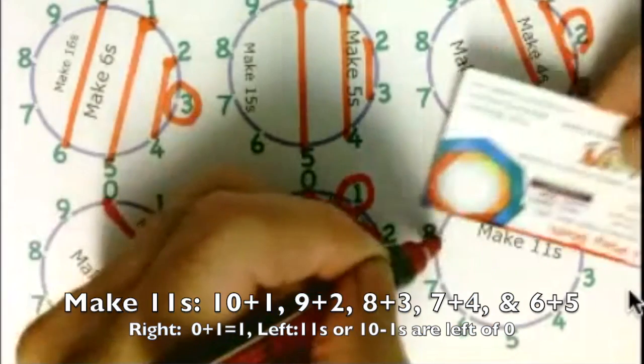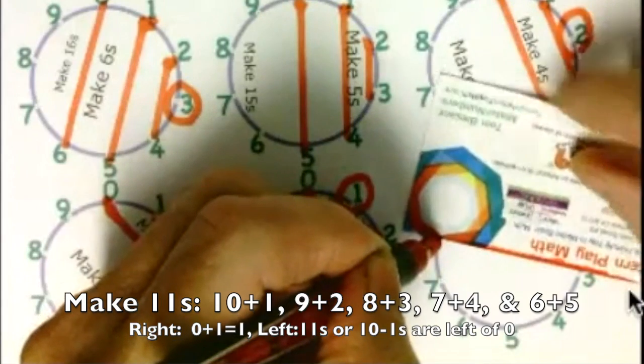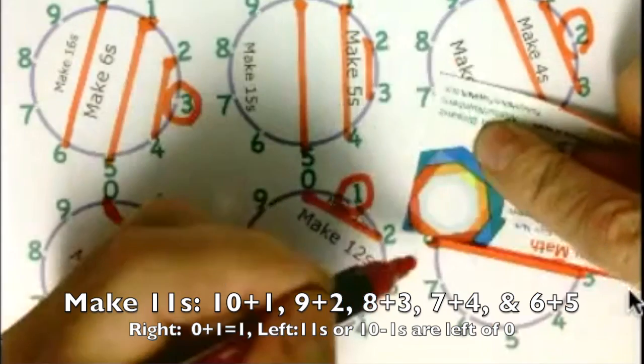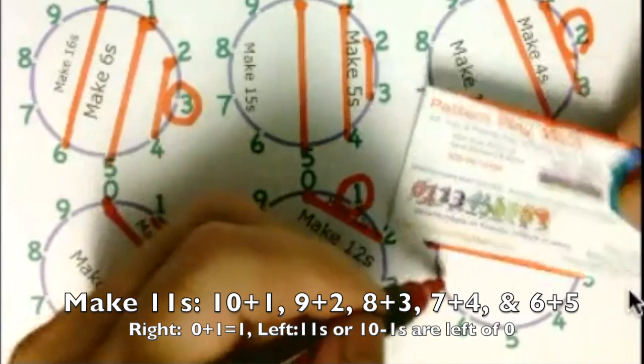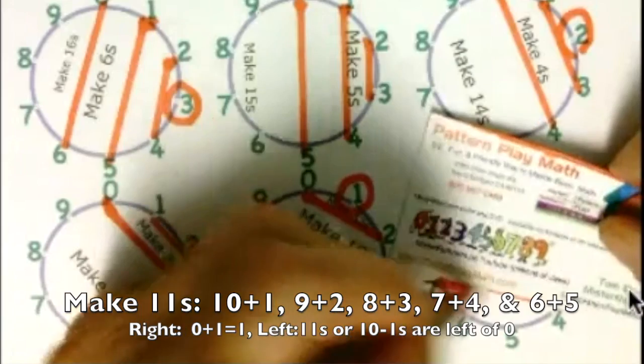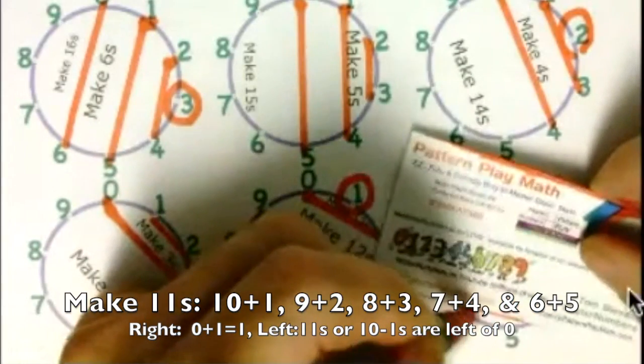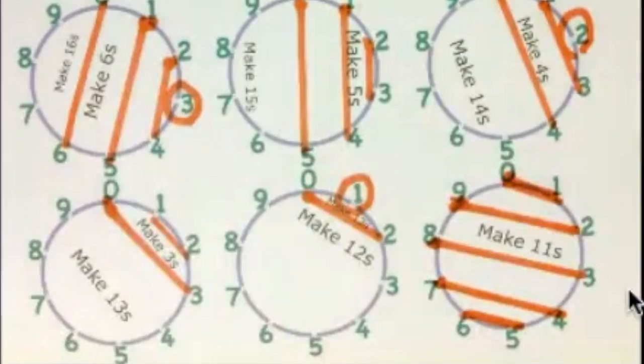And 9 and 2 make 11 and our parallel lines. I'll turn my card upside down so you can see my card. And 7 and 4, and 6 and 5. And those all make 11s.